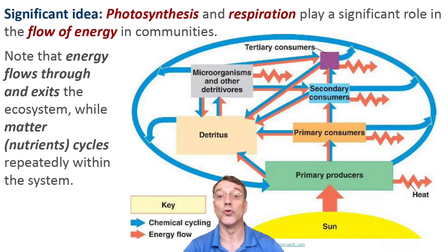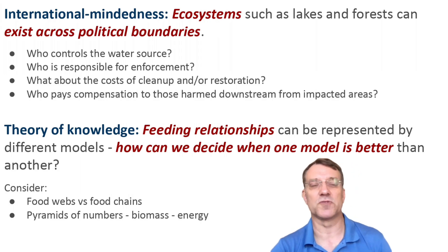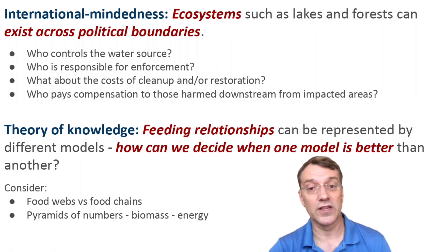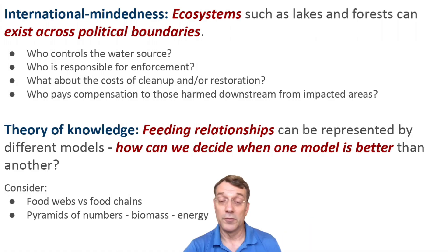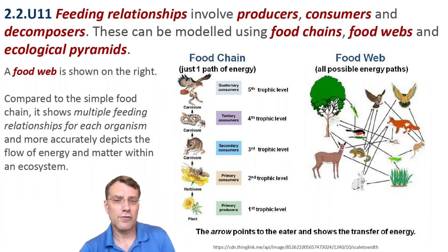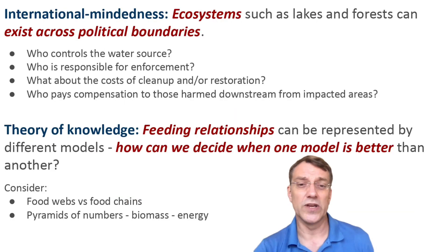Remember that energy flows through a system while matter cycles within it. Many ecosystems cross political boundaries, creating international management challenges — questions arise about who controls water resources, who's responsible for enforcement, who pays for cleanup, and who compensates those affected downstream from pollution. From a TOK perspective, it's worth considering how different models represent feeding relationships: when is a food web more appropriate than a simple food chain, and when might a pyramid of numbers be more informative than a pyramid of biomass? These choices influence the way we understand ecosystem dynamics.